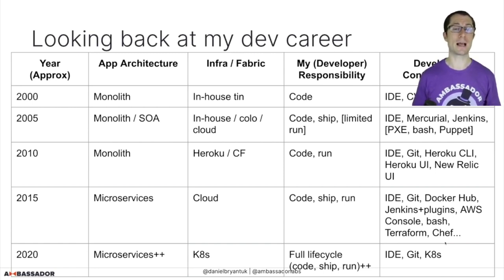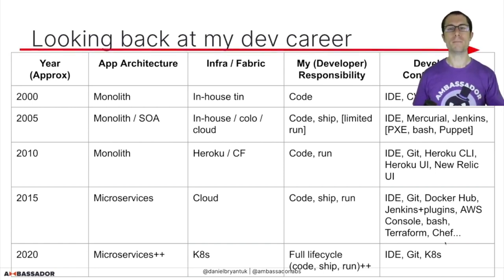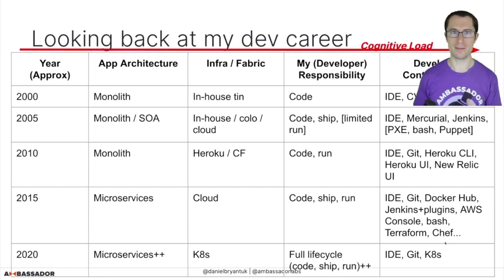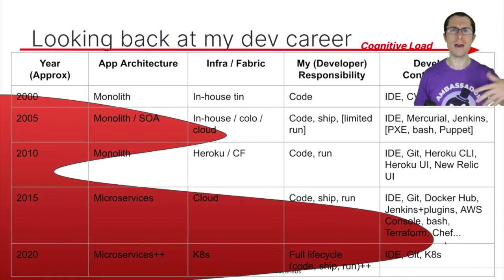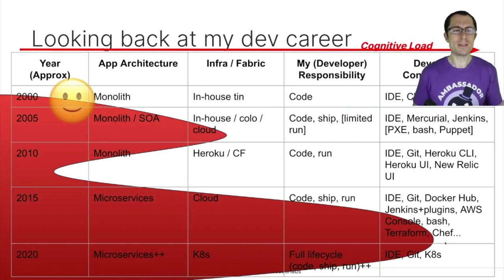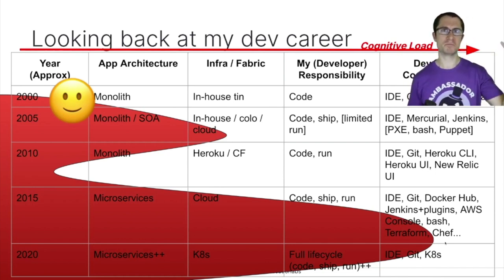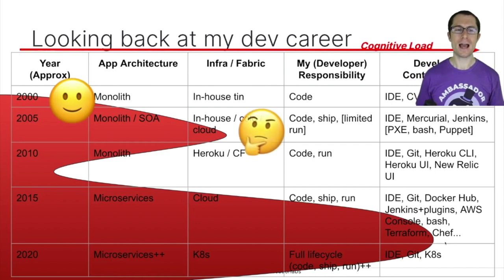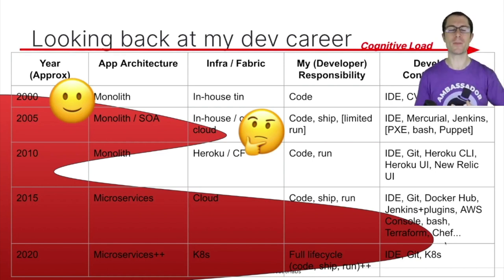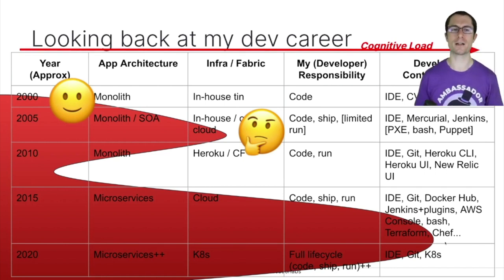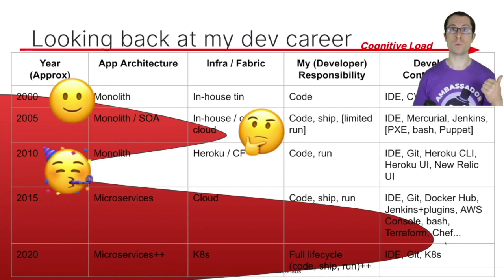If I map my cognitive load over the years as a developer, it's an interesting graph. In my early years I was learning a lot fresh out of university, but I was pretty happy — I created my Java app, packaged it in a JAR or WAR artifact, handed it off to ops, and stuff happened. As I got into more SOA I was spinning up tin, racking and stacking. Even if I didn't want to go that deep in the infra, I still had to think about application service buses and enterprise service buses — more infrastructure-y components. It felt a lot more complicated.